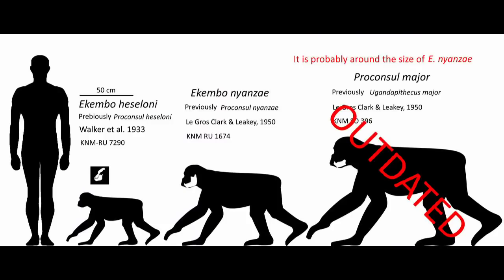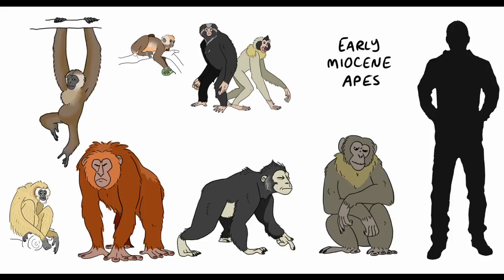We have the larger ape, known as Akembo nianzae — formerly Proconsul nianzae — and the smaller ape, Proconsul africanus. Larger than both, however, is Proconsul major, who is likely a bit larger than modern chimps. The early Miocene was home to more apes than just Proconsul, Akembo, and Ronglipithecus.